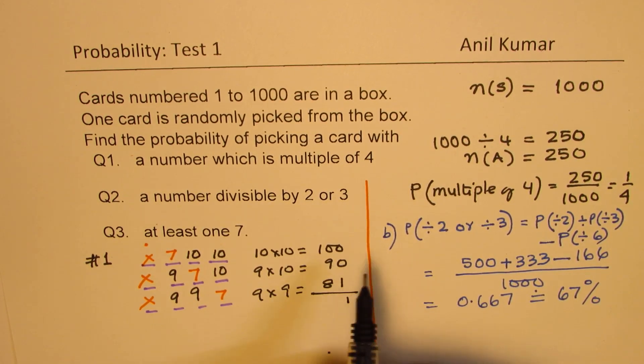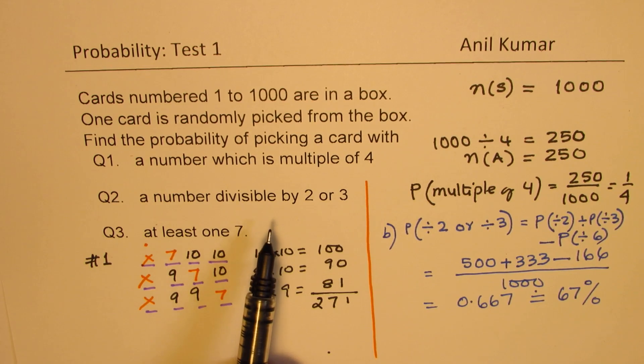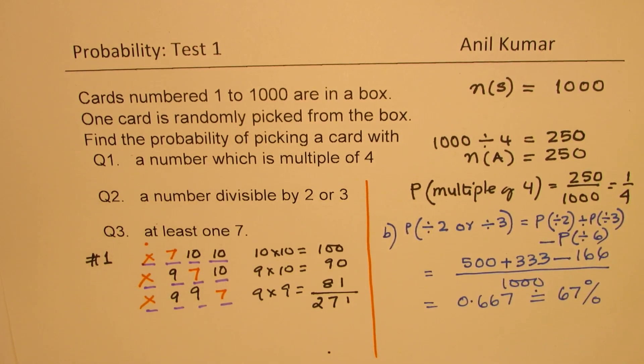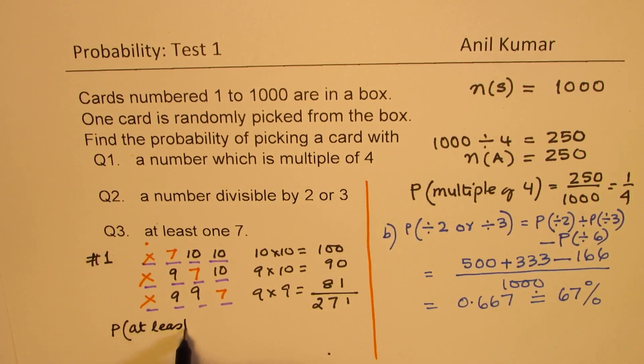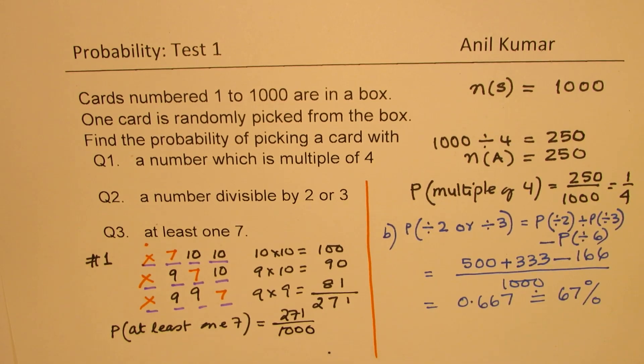And therefore, this total here is how much? It is 8 plus 9, 17, then 271. So there are 271 favorable cases as compared to total options of 1000. And therefore, the probability of at least one 7 is equal to 271 over 1000. Is that clear to you? So that is how we are going to answer this question.